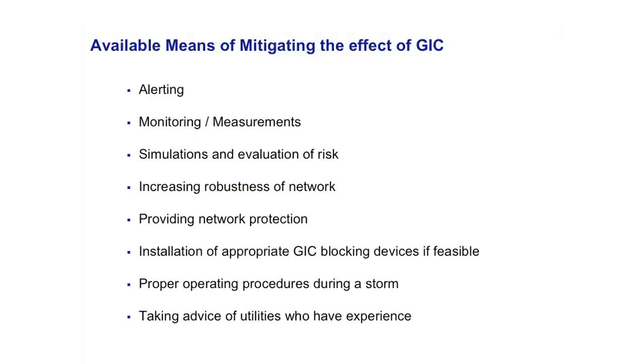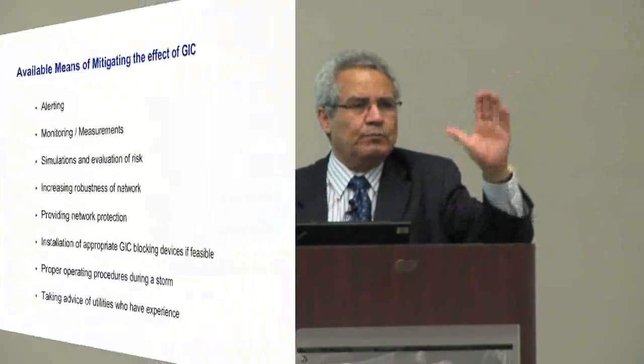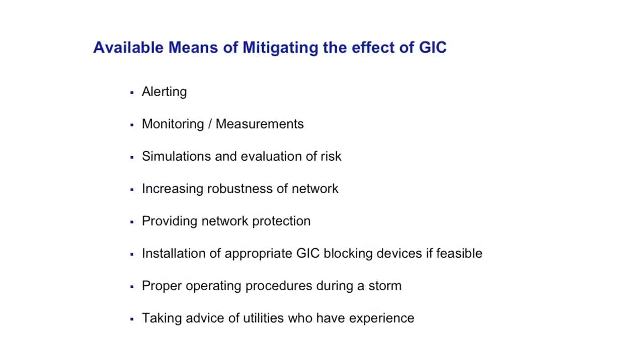Proper operating procedures during a storm are important. Since utilities know something is coming at least 20 minutes early, if they have established operating procedures they know exactly what to do: take certain transformers out of circuit, or disoperate specific relays until the storm passes. The last point is taking advice from utilities who have experience — once you go through an experience like this, you know how to deal with it. Utilities like Hydro-Quebec, Public Service, and utilities in Sweden and South Africa have gone through this, so there is no need to reinvent the wheel.